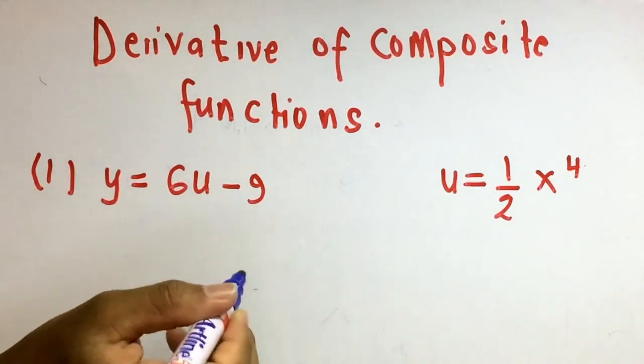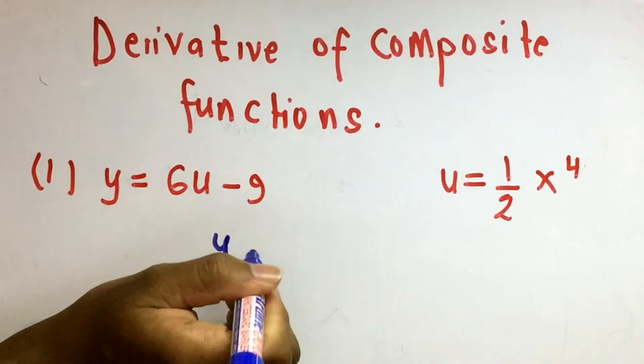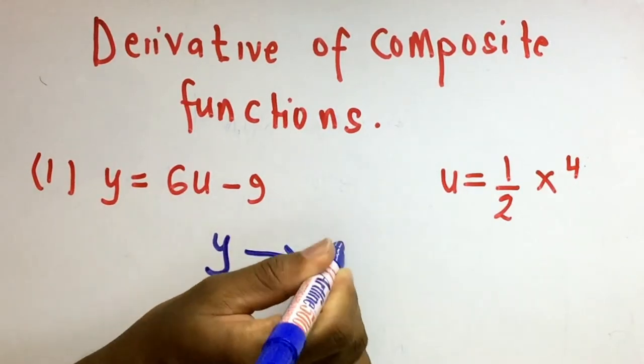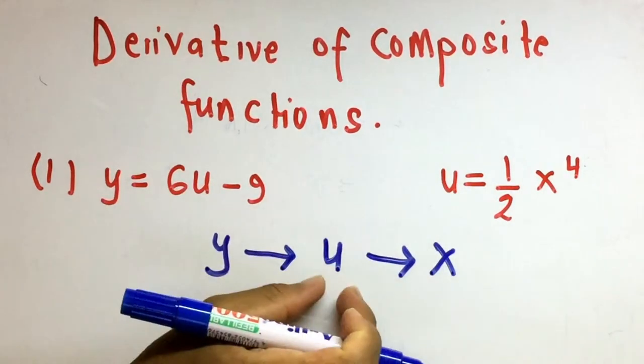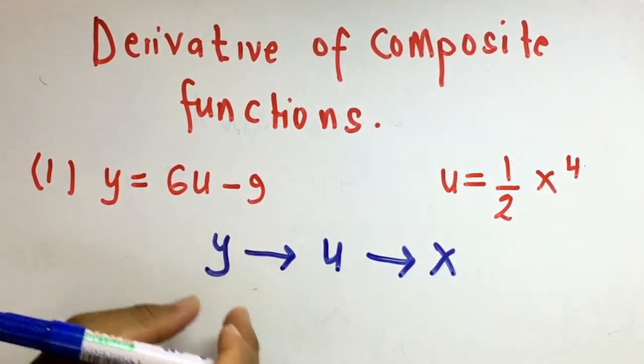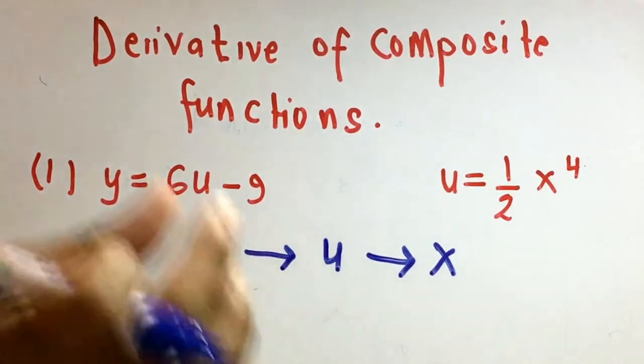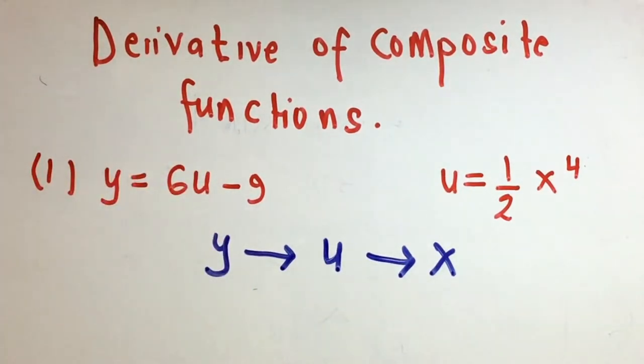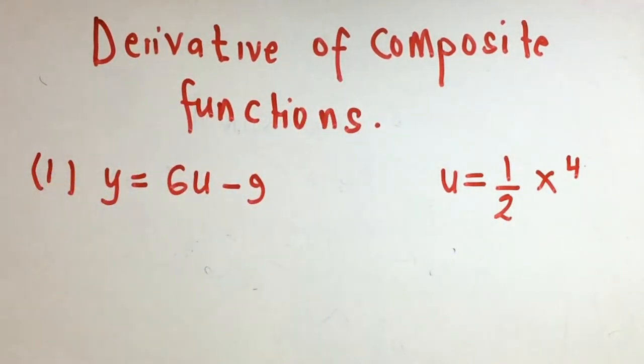This is a composite function. Function y is a function of u, and u is a function of x. This is what we call a composite function, and we need to find the derivative of this composite function.